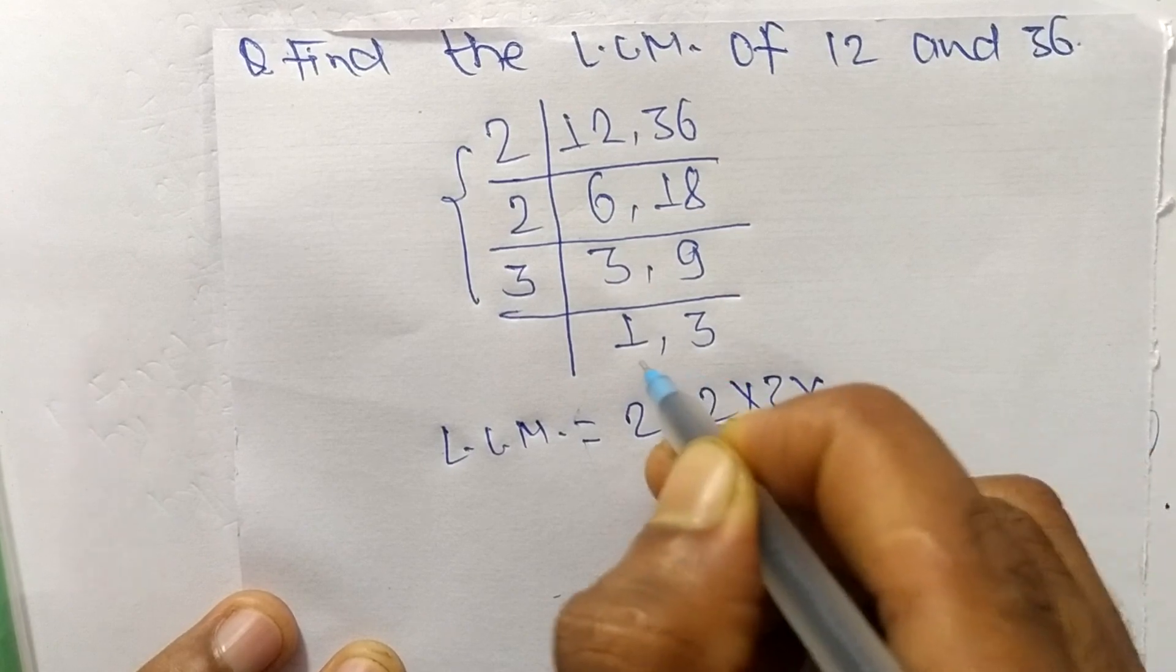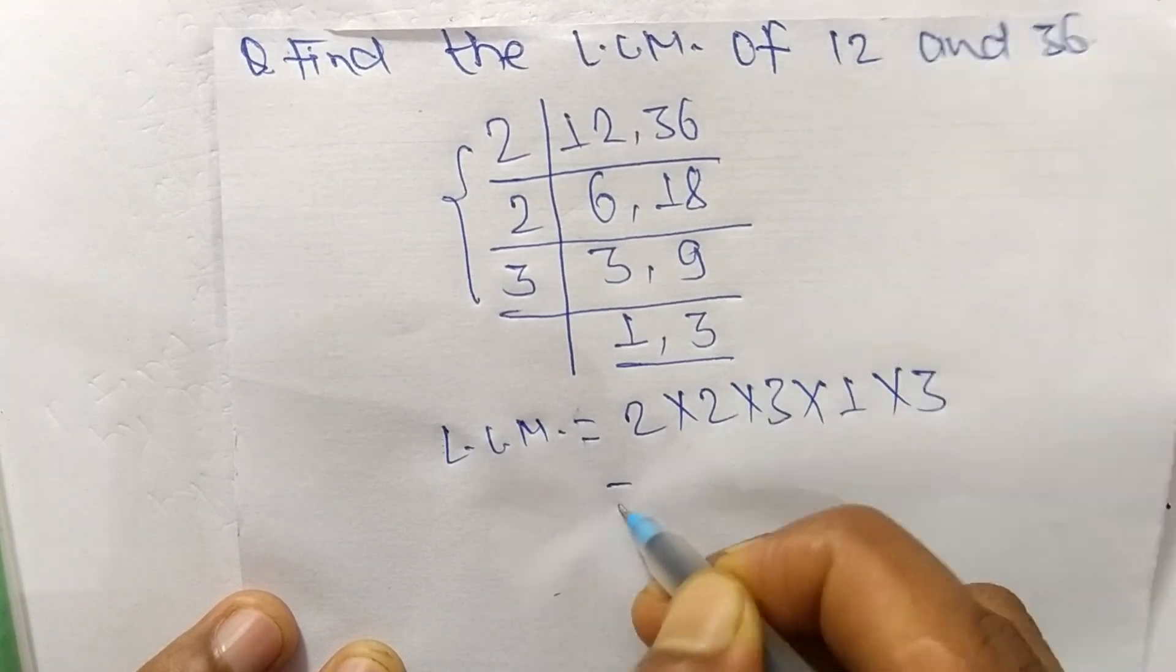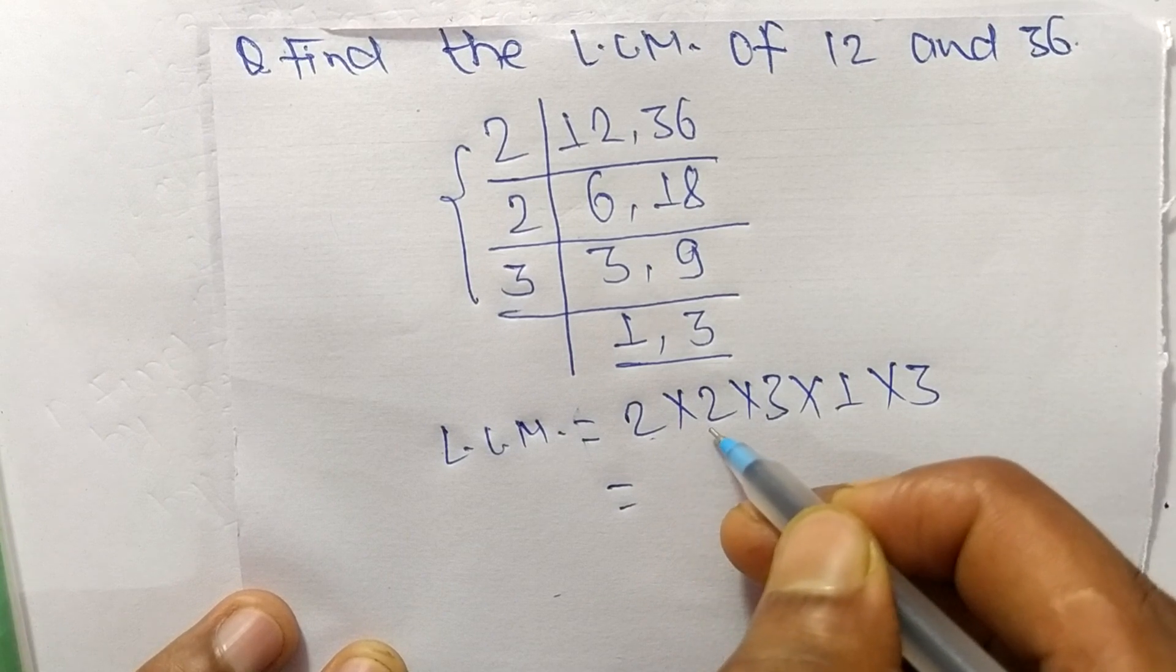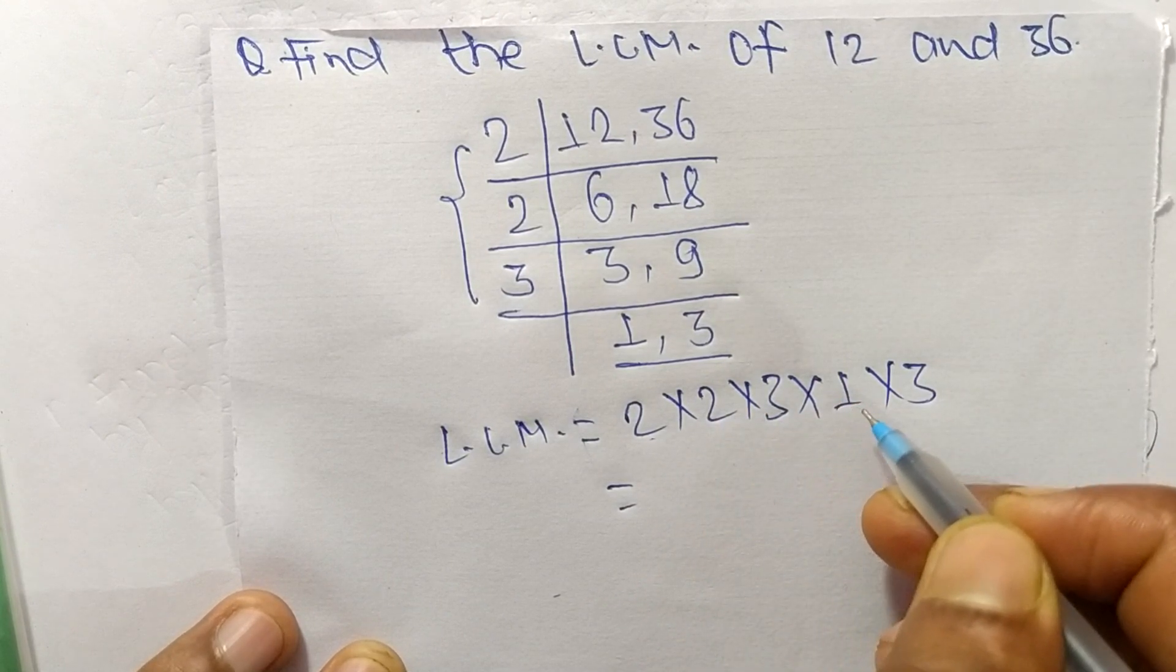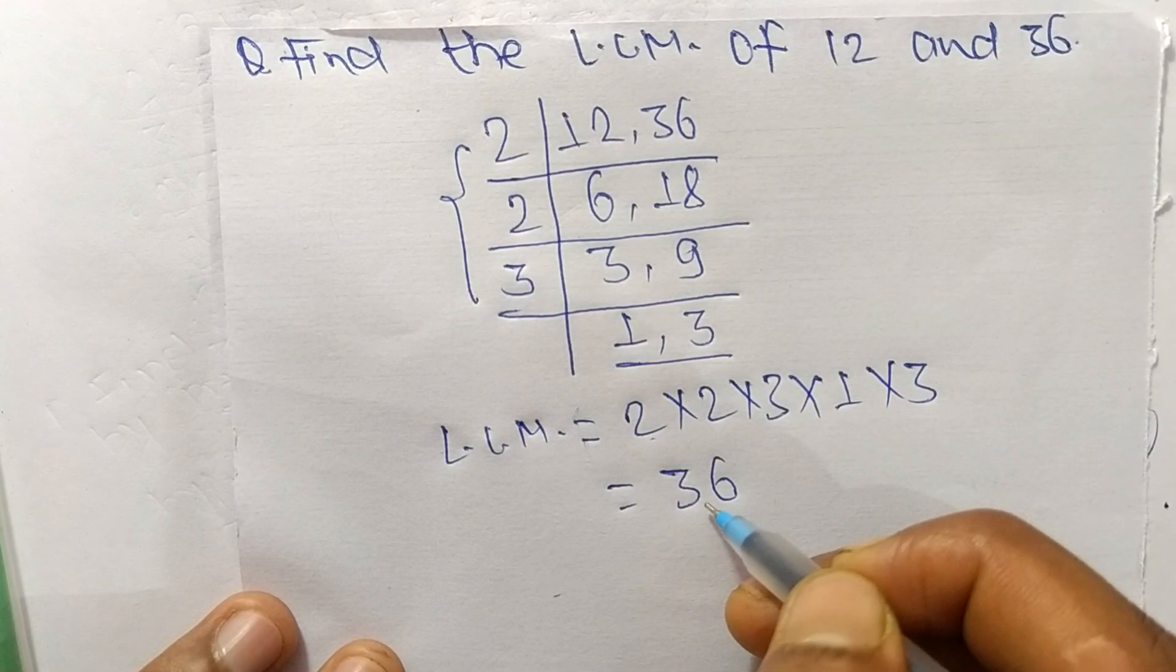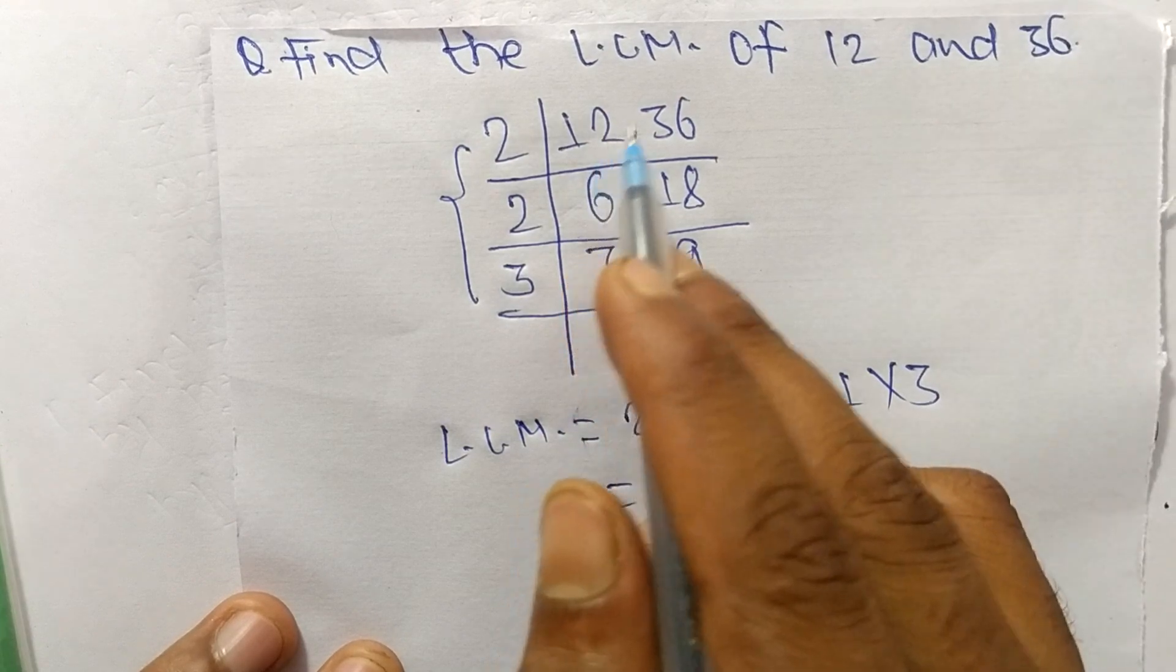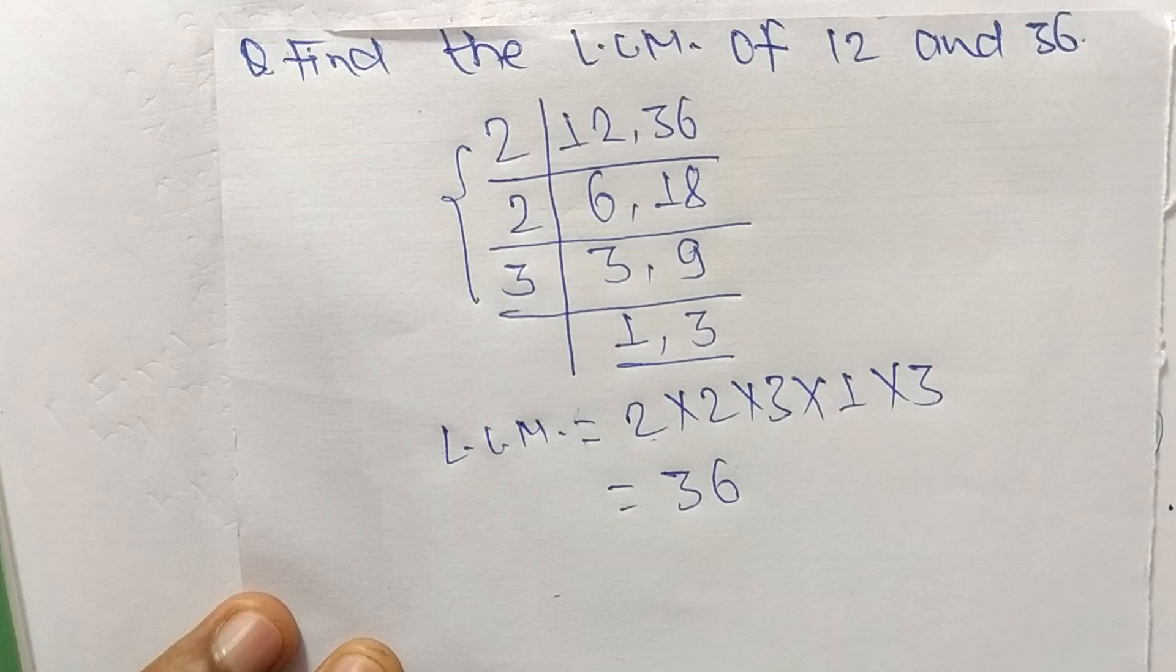So 2 times 2 means 4, 4 times 3 means 12, 12 times 1 means 12, and 12 times 3 means it is 36. So 36 is the LCM of 12 and 36. So this much for today and thank you for watching.